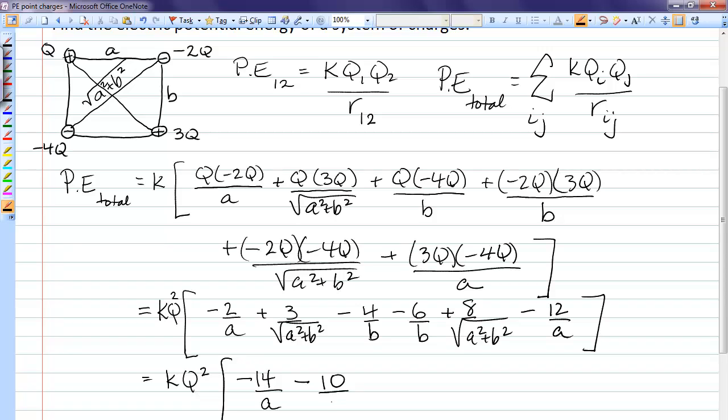The B terms give us negative 10 over B, and the square root terms give us 11 over the root of A squared plus B squared. And that's the final answer.